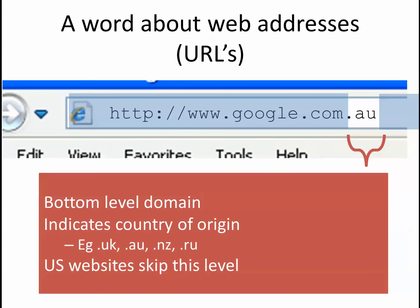Let's focus on the useful part — the bottom level domain. After the last dot, it typically indicates what country that website is based in. So .uk is a United Kingdom website, .ru is a Russian website, .au means it's an Australian-based website. The way it all happened is these protocols were developed in the United States, almost as an add-on for other countries. There's no real .us because by default .com, .net, .whatever is seen as a US-based website.